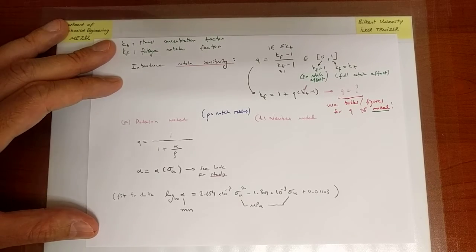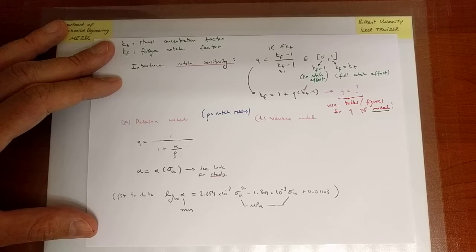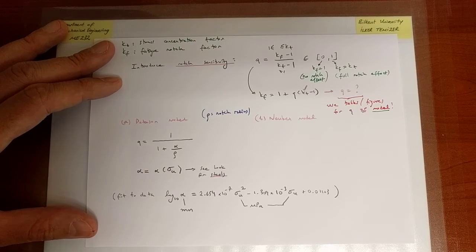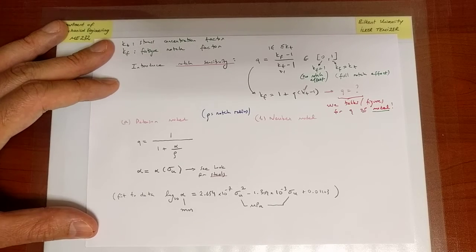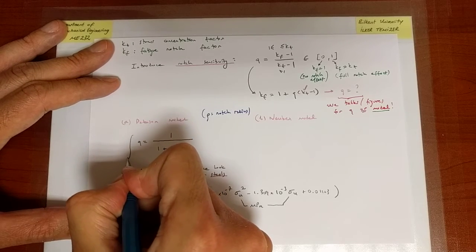This here as well, it's in megapascals, plus 0.01103. So that is our fit to the data that is provided. That is just one relation that appears in the Peterson model.